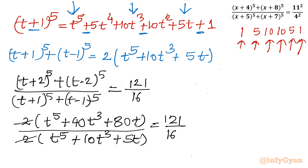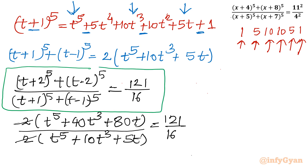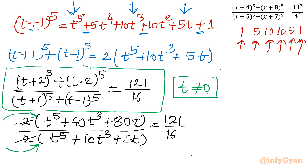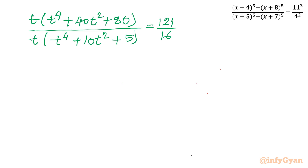Now I will take t common from both numerator and denominator. But first, what happens if t = 0? The numerator becomes 2^5 + (−2)^5 = 0 and the denominator also becomes 0, giving a 0/0 indeterminate form. So we reject t = 0 as a solution. Since t ≠ 0, we can cancel t from numerator and denominator.